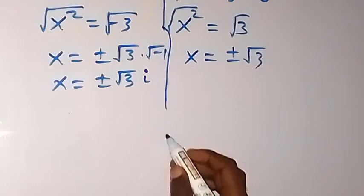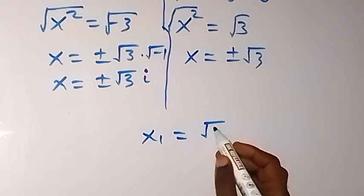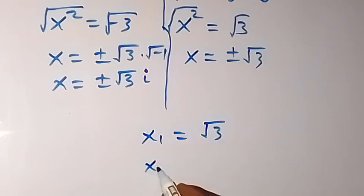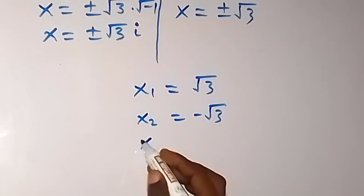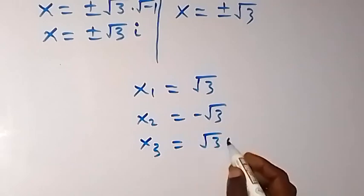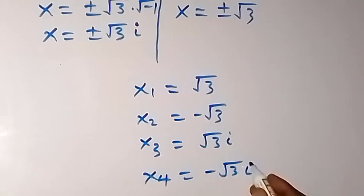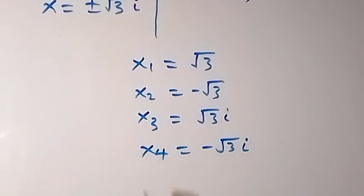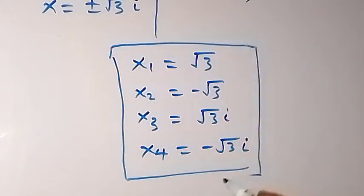And altogether here we have four solutions. We can say x1 from here, let's say root 3, and x2 equals minus root 3. And that is the two solutions. And x3 from here we have root 3i, and x4 we have minus root 3i. And here we have all this to be a solution to this given problem.